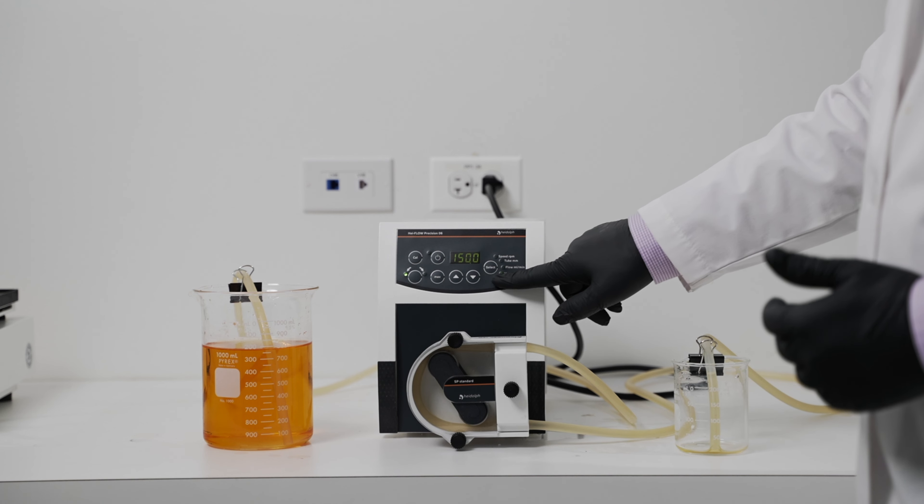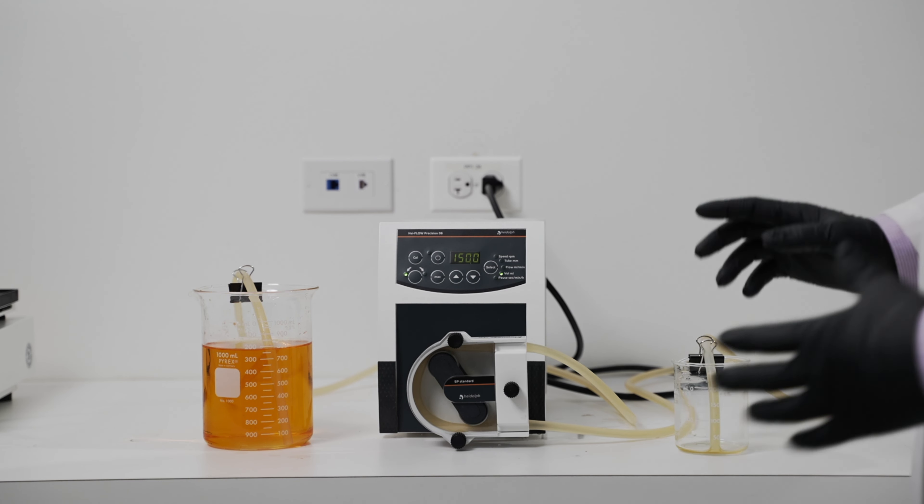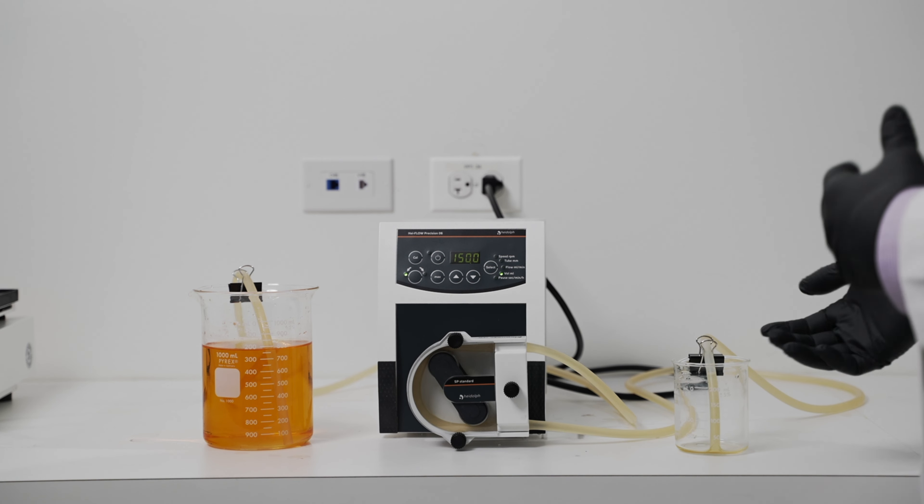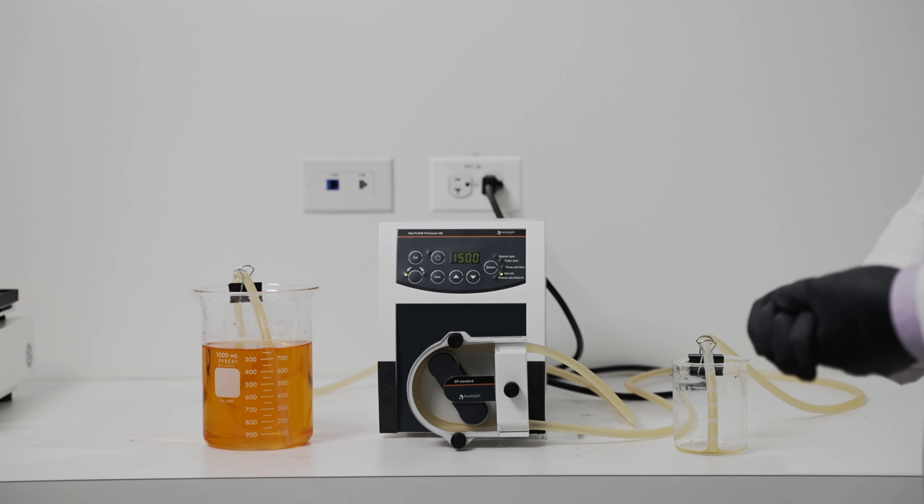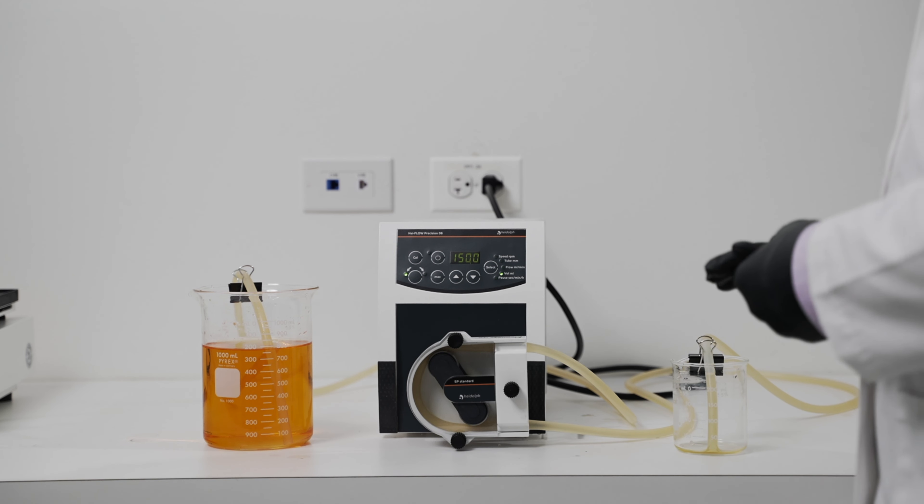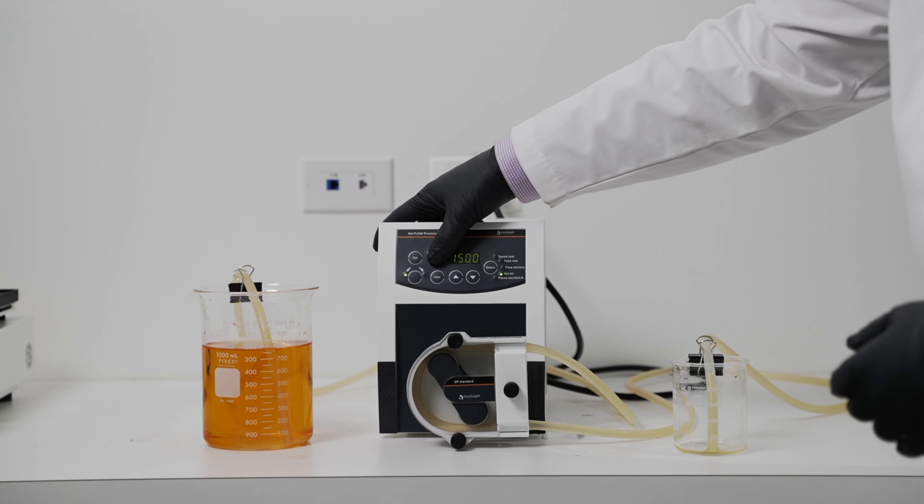To do that, we'll hit select twice to go down to volume milliliter, and you're going to want to set it to a volume that your measuring device can hold. In my case, I've got a 200 milliliter beaker, so I'm going to go with about 150 milliliters of fluid. Once we have that set, we can start that volume dose.